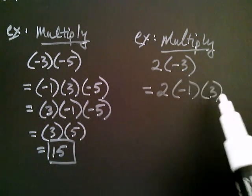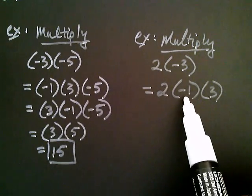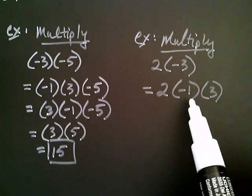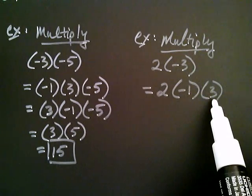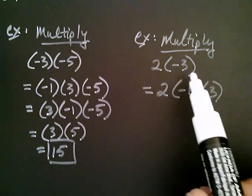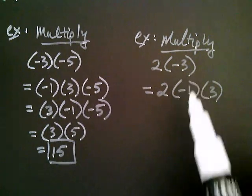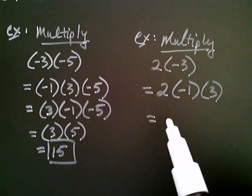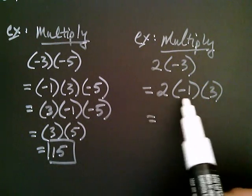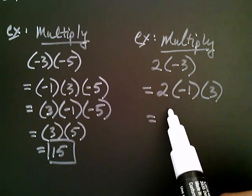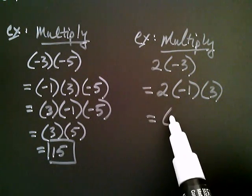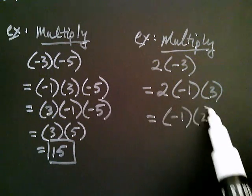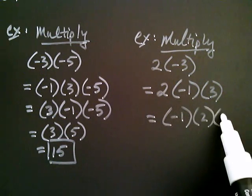Let's just double-check that: negative one times three — the effect of negative one is to change the sign of three, making it negative three. So that's right. But now I can interchange the order, and I'm looking at negative one times two times three.